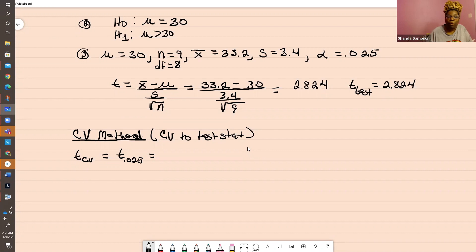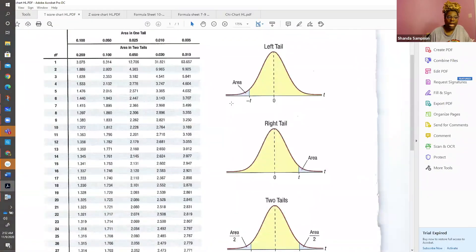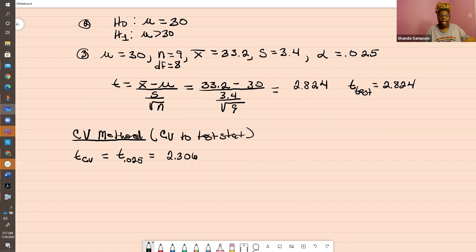Here is our T chart. We know that our degrees of freedom is 8 and we're looking for 0.025 one tail. You go down to 8 degrees of freedom, 2.306. And since this is area to the right, of course it stays positive. If it was area to the left, then you would put a negative sign on it.